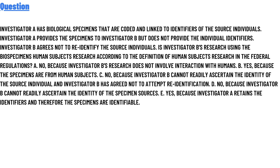Option B: Yes, because the specimens are from a human subject. Option C: No, because Investigator B cannot readily ascertain the identities of the source individuals, and Investigator B has agreed not to attempt to re-identify. Option D: No, because Investigator B cannot readily ascertain the identity of the specimen source. Option E: Yes, because Investigator A has retained the identities and therefore the specimens are identifiable.